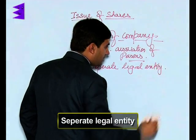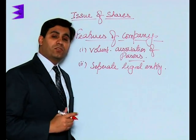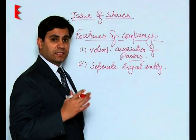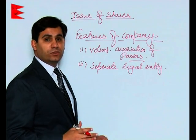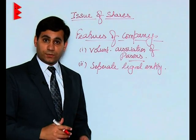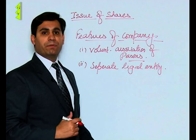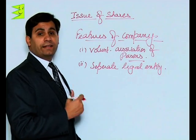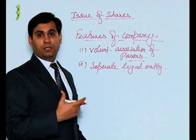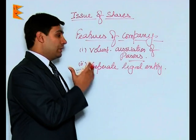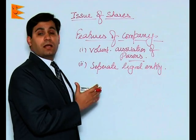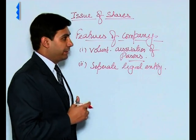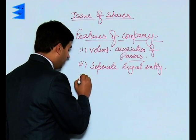Other forms of business like sole proprietorship and partnership do not have any legal existence — their existence is contingent on the existence of their owners. But in the case of a company, it has a separate legal existence and identity provided to it by law. That is, the members' identity is separate and the company's identity is separate.